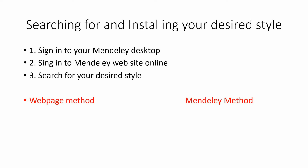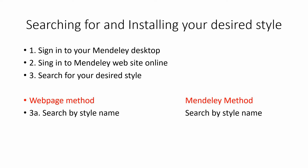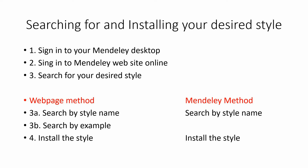The desired style can be searched with two different methods: from within the Mendeley desktop or from the Mendeley website. In both methods you can search your desired style by name — for example, you can search for a Vancouver style or Harvard style. In the webpage method, there is another way of searching: by example. I will tell you later how you search your desired style by an example. After you find the style, you will have to install it. I will tell you both methods — from within the Mendeley desktop and through the webpage method.